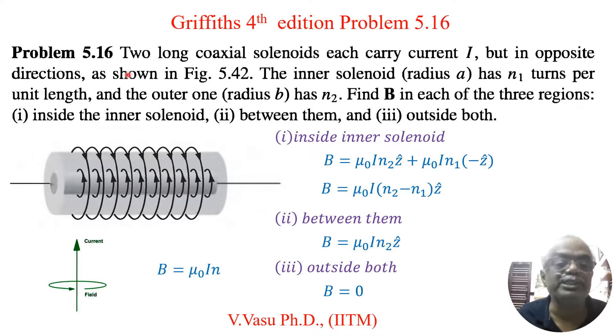Problem 5.16 is two long coaxial solenoids, each carrying current I, but opposite in direction as shown in the figure.